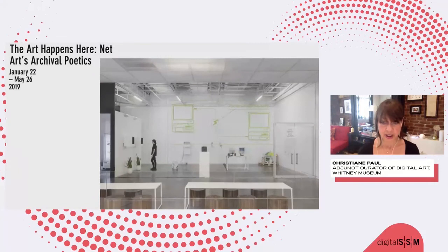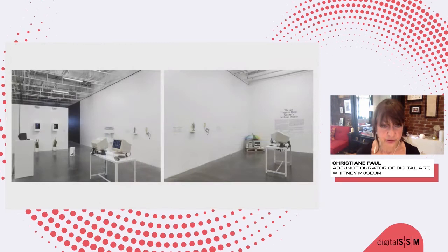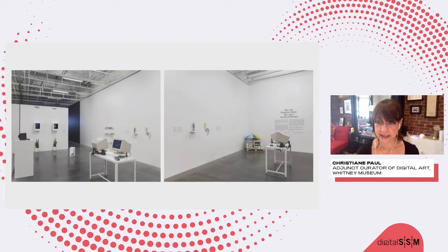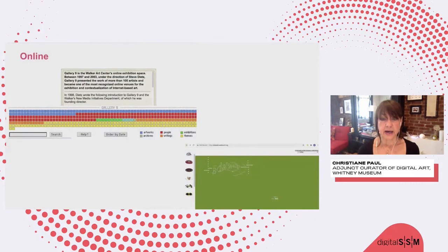I also want to briefly mention Art Happens Here, curated by Rhizome — an exhibition of works preserved through Rhizome's Net Art Anthology series, which I'll talk about a little bit later. What I want to draw attention to, inspired by the net art diagram shown earlier, is that Rhizome decided to present the works on older machines and screens that really captured the environment of their creation. So the physicality of the show also very much references the timeline at which these works were created.